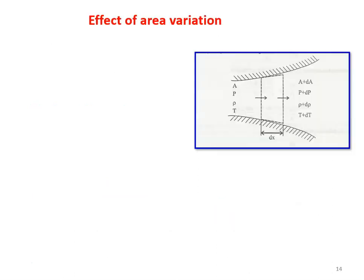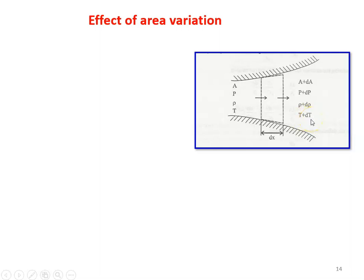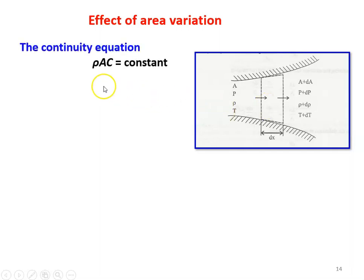Effect of area variation: what is the effect of area variation in the isentropic flow? We take a variable area duct and a small control volume of thickness dx in the direction of the flow. On the left side, before entry to the control volume, the area is A, pressure is P, rho is the density, and T is the temperature. After the control volume, the properties are A plus dA, P plus dP, rho plus d-rho, and T plus dT. The properties are changing across the small elemental control volume.